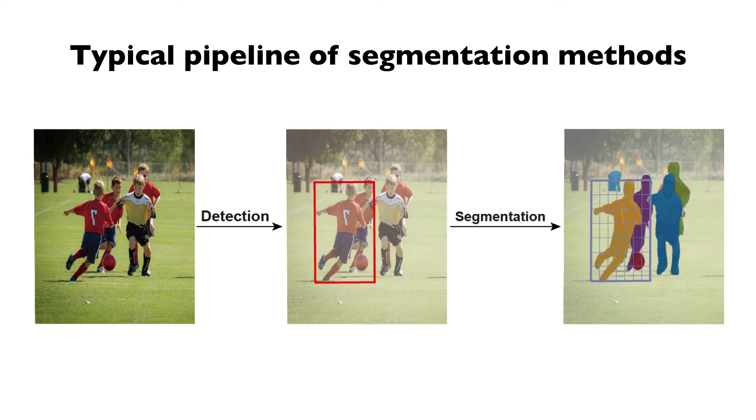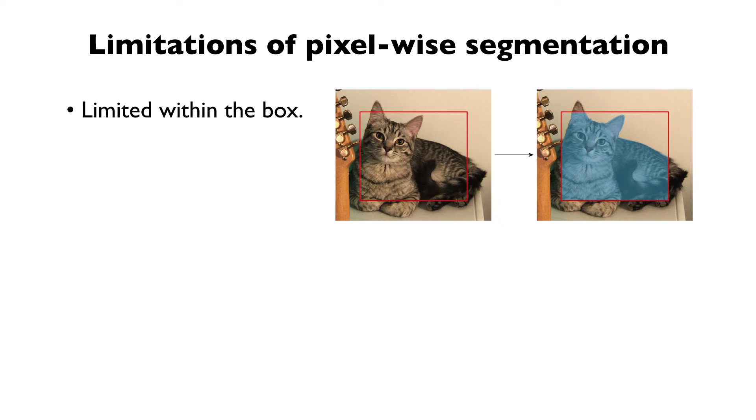Most segmentation methods adopt a two-stage pipeline. They first detect objects and then perform pixel-wise segmentation within the object boxes. However, there are some limitations of pixel-wise segmentation. First, the segmentation is limited within the box, which cannot resolve errors in localization.